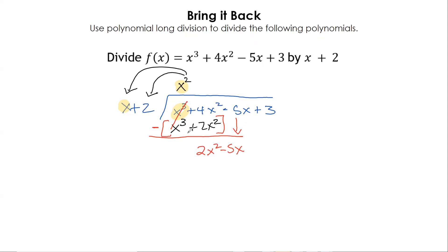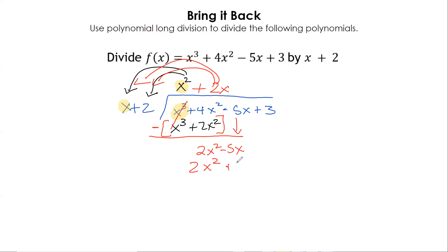You will use this — this does not go away; you use this in higher levels. Now ask yourselves what times x gives me 2x squared. That's 2x. 2x times everything on the outside gives me 2x squared plus 4x. Change my sign, draw my line, subtract — negative 5 minus 4 gives me negative 9x.